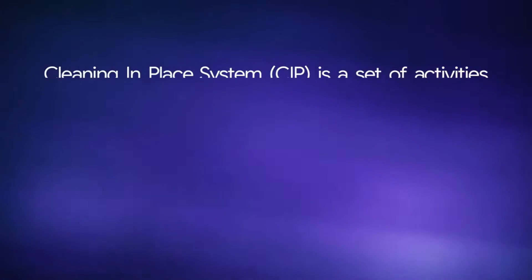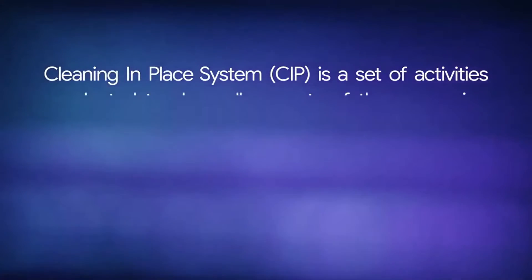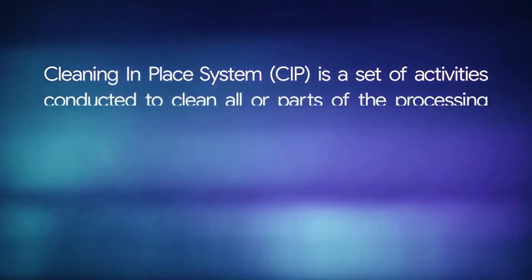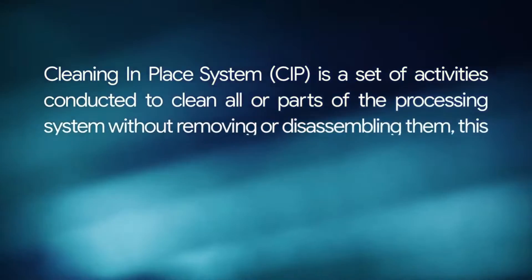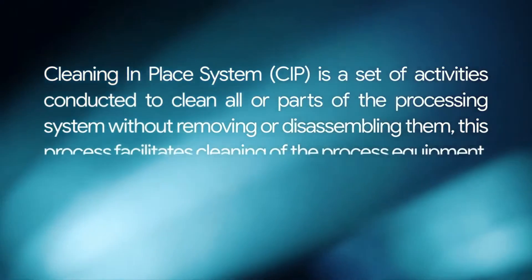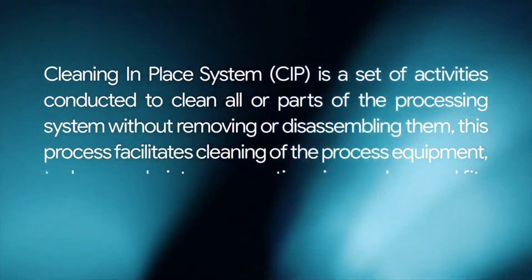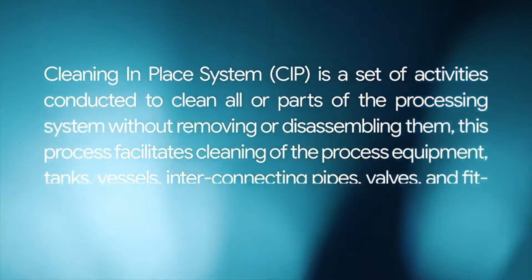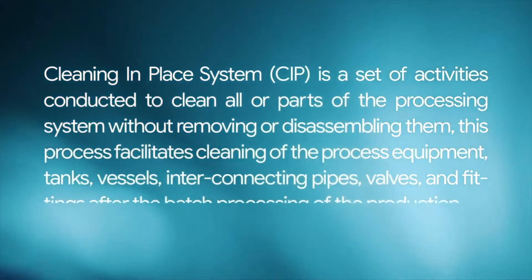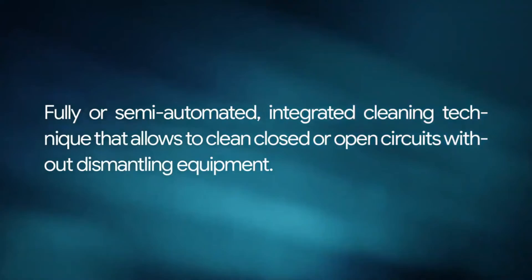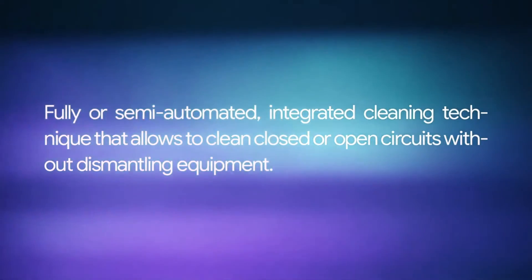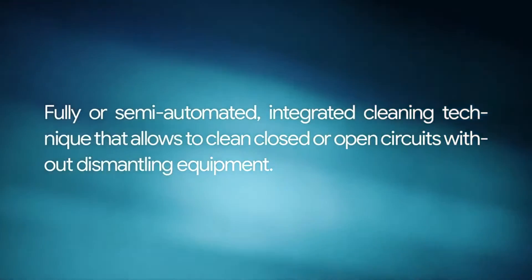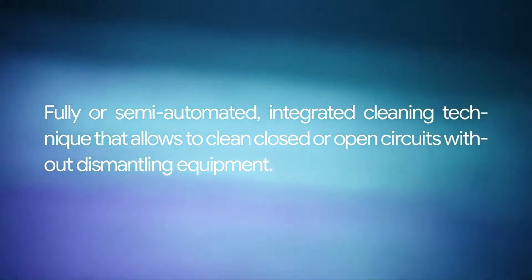Cleaning in place system, CIP, is a set of activities conducted to clean all or parts of the processing system without removing or disassembling them. This process facilitates cleaning of the process equipment, tanks, vessels, interconnecting pipes, valves, and fittings after batch processing — a fully or semi-automated integrated cleaning technique that allows cleaning of closed or open circuits without dismantling equipment.